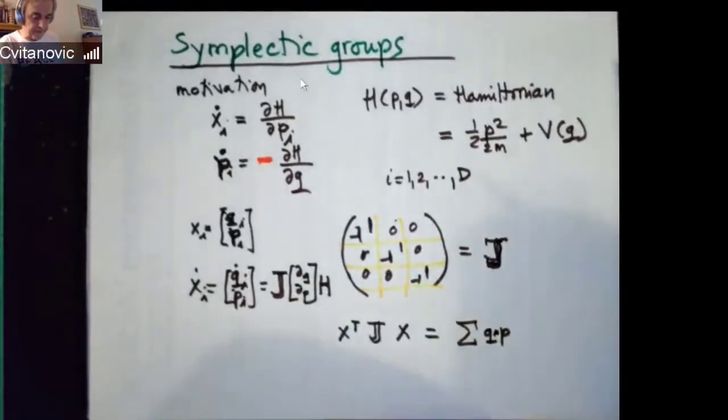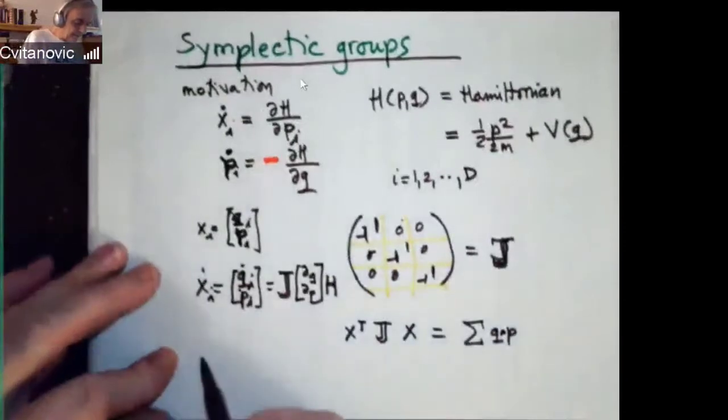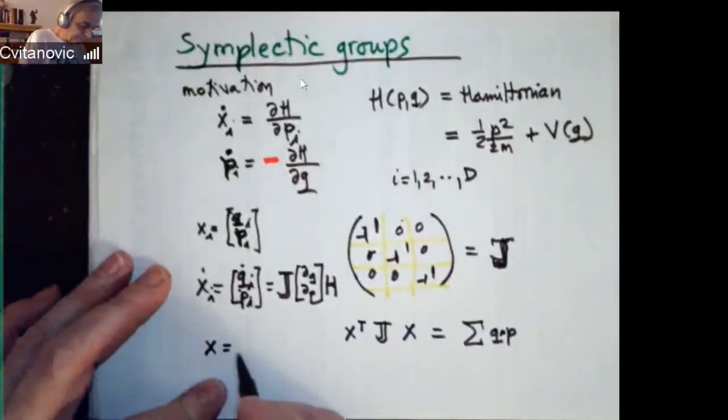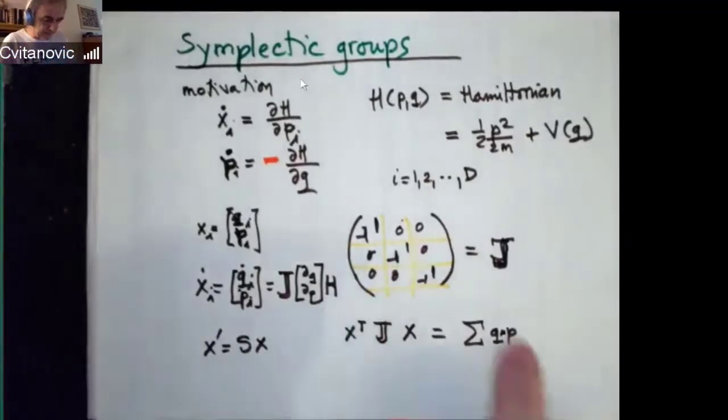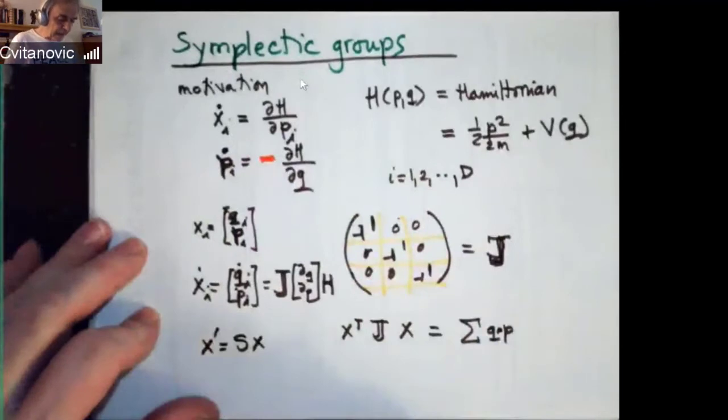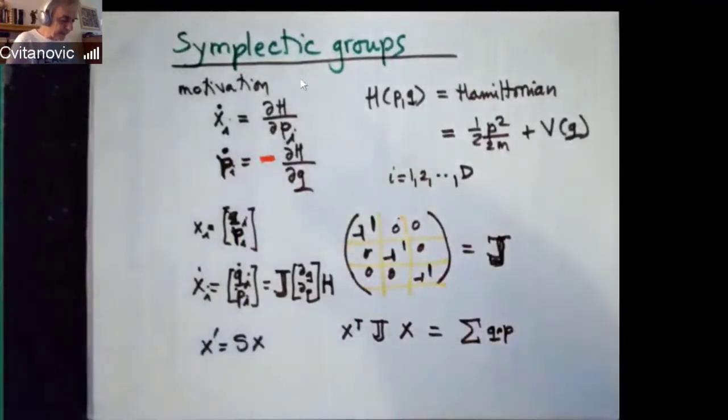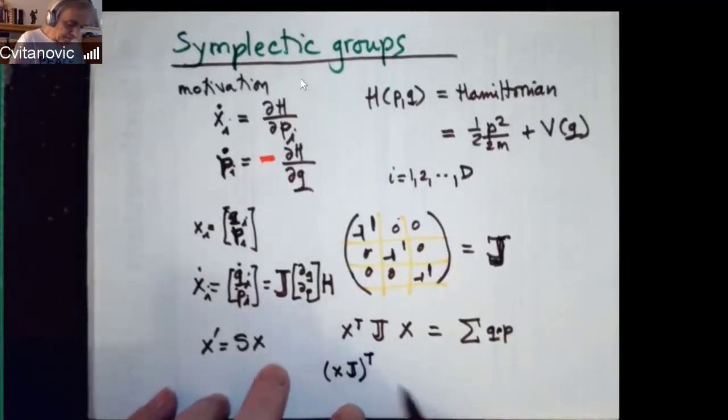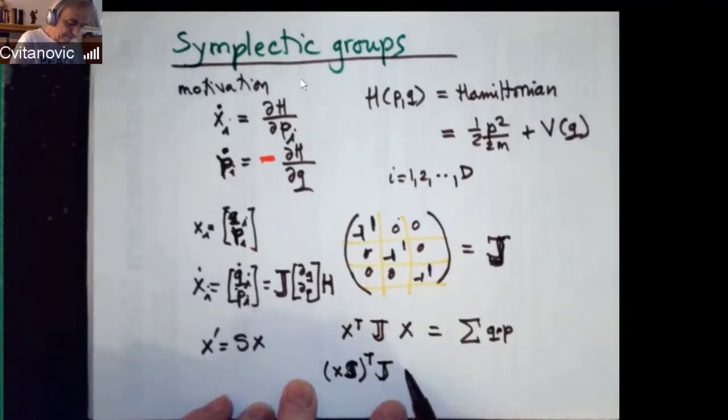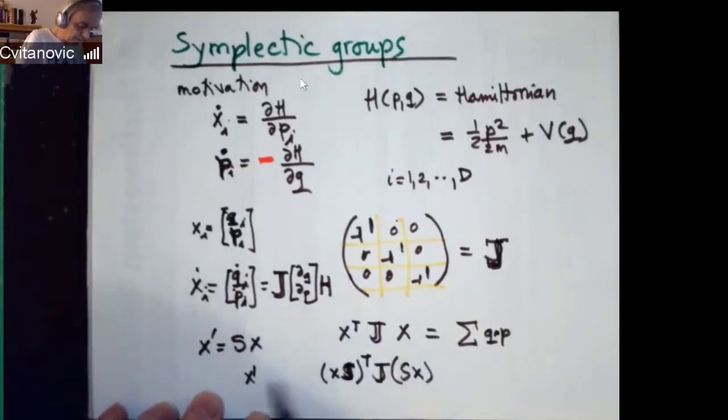And now you would like to change coordinates in phase space in such a way that you don't change your mechanical system. And that means if I change X to S of X, this is now a matrix which is two times D, this D number. I would like to have the same invariant here. In other words, I would like to have S transpose J, I would like this to be the same as the original phase space form.